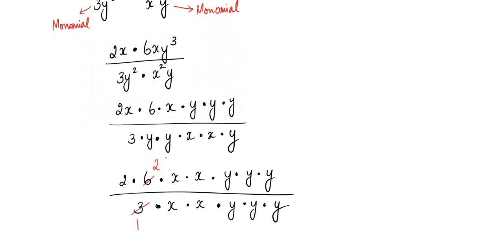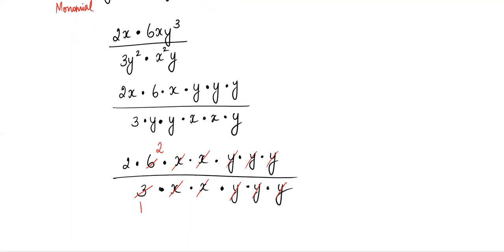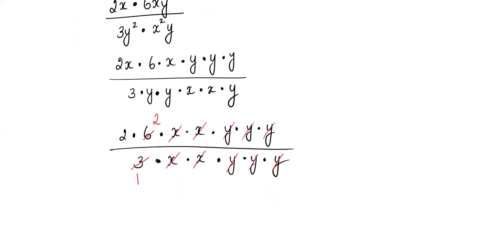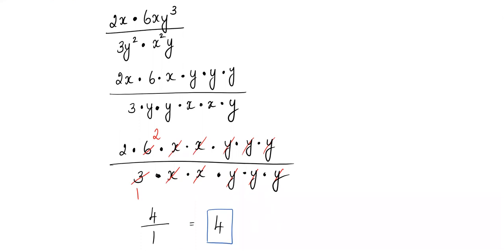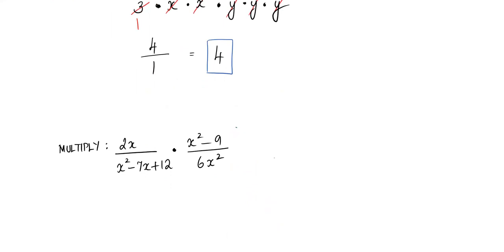Now that everything is in its barest form, we can simplify. The numbers: 3×1=3 and 3×2=6 — good. The x's match so they cancel completely. This is only possible because there is multiplication between them — if there were a plus or minus, this would not be possible. After cross-cancelling and cleanup, we're left with 4 on top and 1 on the bottom, which simply makes it 4. That looks lovely!